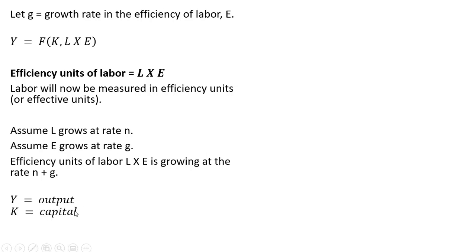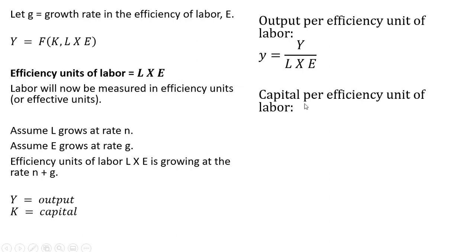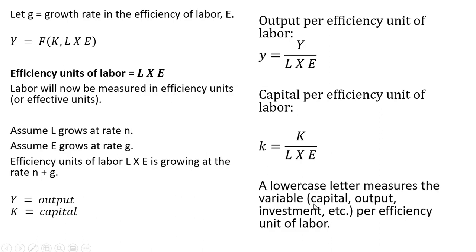Y is output, K is capital. In terms of output per efficiency unit of labor, we define lowercase y as output or GDP per efficiency unit of labor, which is Y divided by L times E. Capital per efficiency unit of labor is capital divided by L times E — not just capital divided by L — and lowercase k represents that. In general, a lowercase letter measures a variable (capital, output, investment, etc.) on a per-efficiency-unit-of-labor basis.